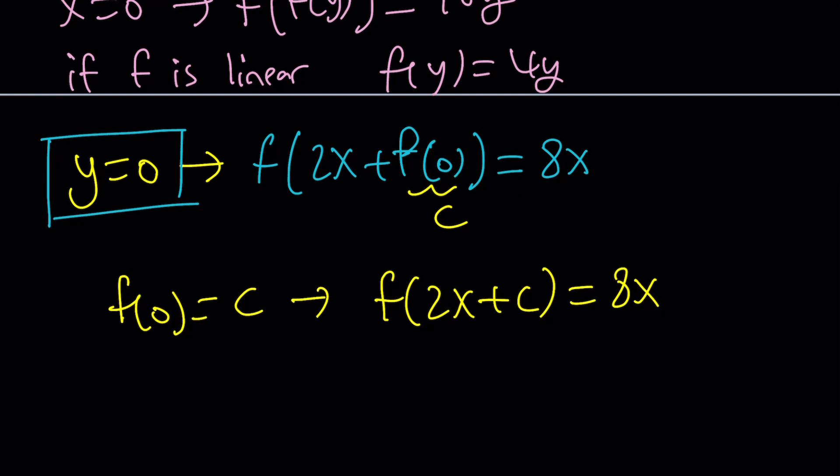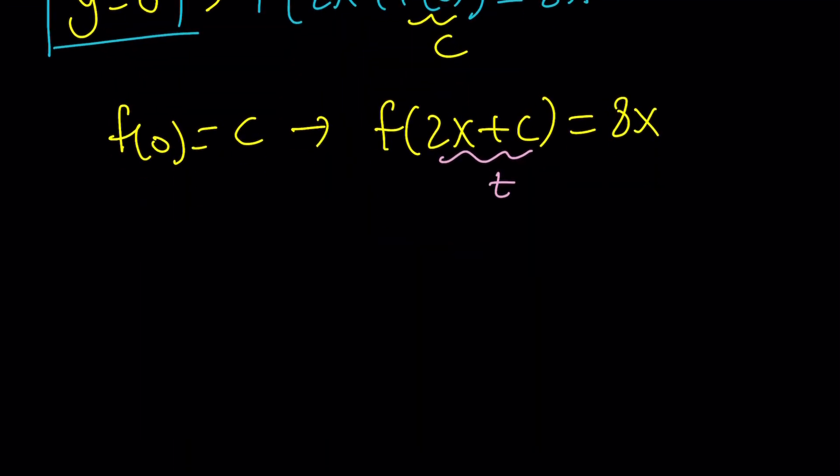So, f of 0 is c. And then we're going to go ahead and just replace f of 0 with c. And that's going to give us f of 2x plus c equals 8x. So, we can replace x with something to get f of x inside the parentheses. But what is that thing? If you don't know what that thing is, you can go ahead and use substitution. Again, let's go ahead and call that t. So, I'm going to find a function in terms of t. 2x plus c is equal to t. 2x is t minus c. And then x is t minus c divided by 2.